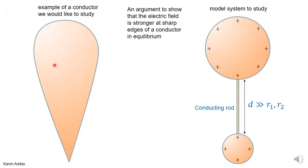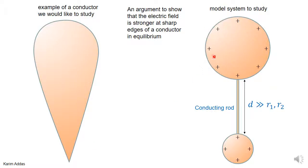We're going to model this conductor as follows: this part can be modeled as a conducting sphere with a large radius. Then we make a very thin conducting rod that connects it to another conducting sphere of a smaller size. The smaller sphere is the analogy of the sharp edge, and the large sphere is the analogy of the part of the conductor that has small curvature.